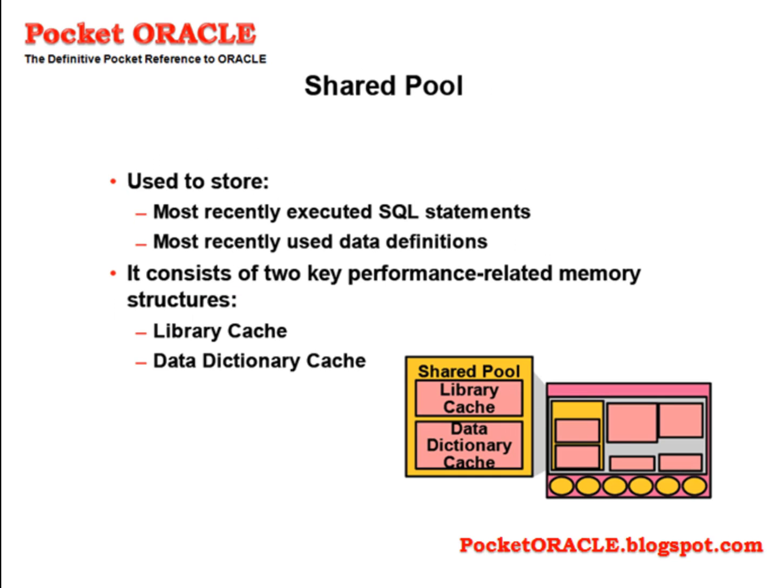The shared pool is further subdivided into a number of other structures: the library cache and the data dictionary cache. The library cache is a memory area for storing recently executed code in its parsed form. Parsing is the conversion of code written by programmers into something executable, and it is a slow process that Oracle does on demand. By caching parsed code in the shared pool, it can be reused without reparsing, and performance can be greatly improved.